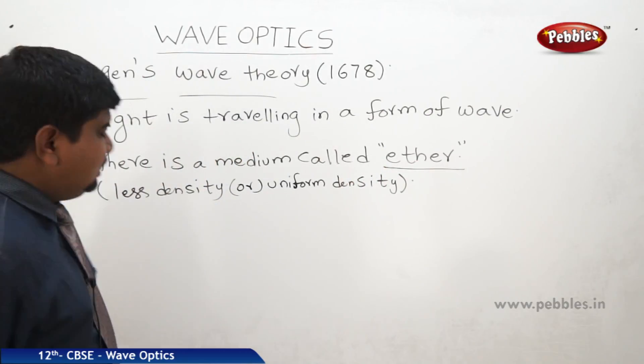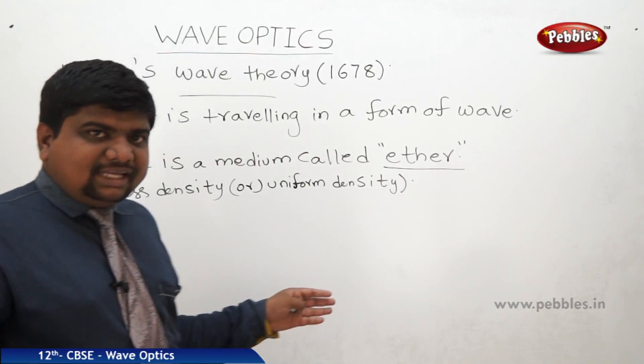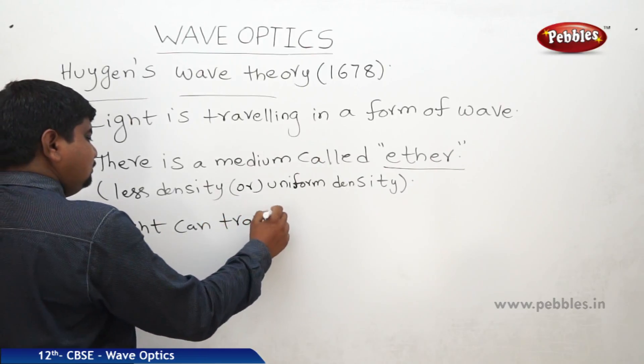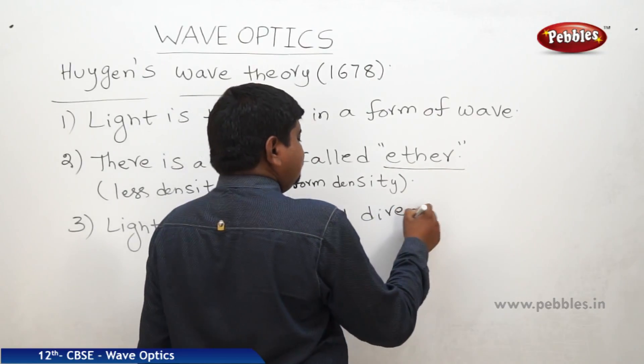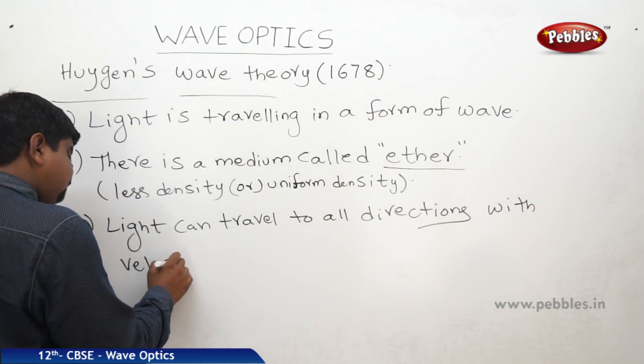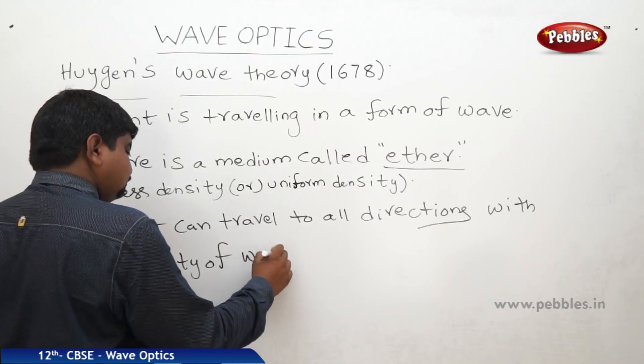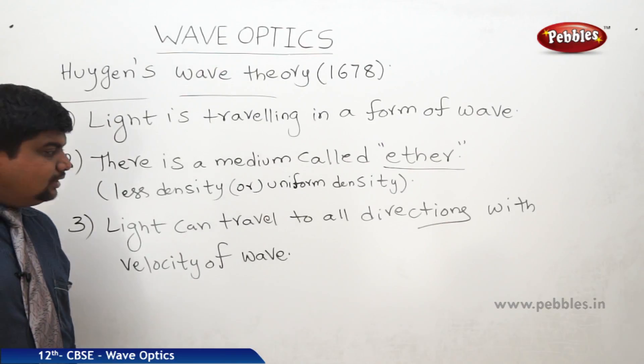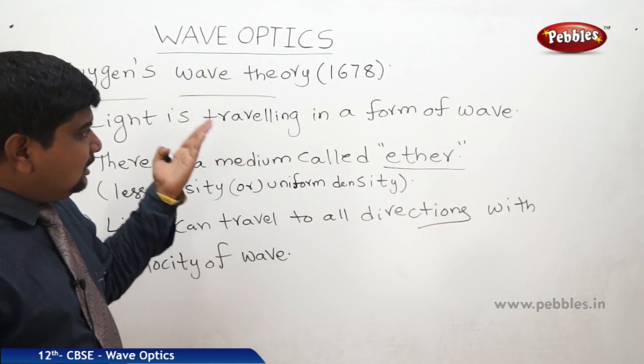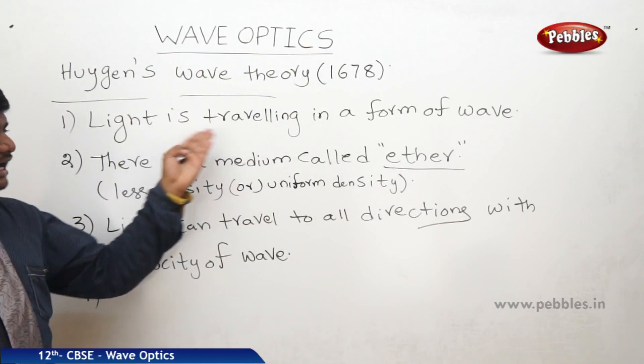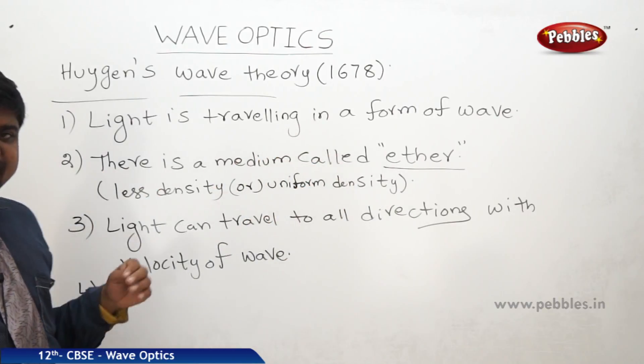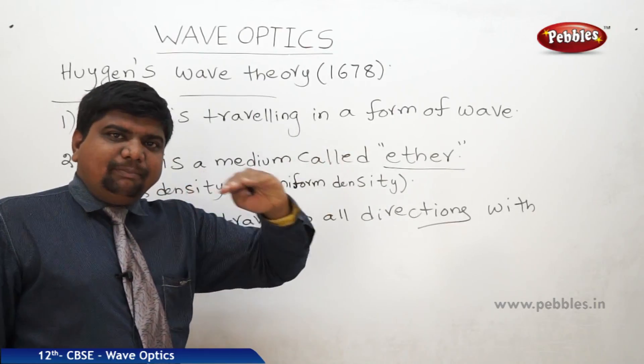This is one more point. And third one, this light can travel to all directions with the velocity of wave. And one more, what we can write is, he said that some of Newton's predictions are true. First one is the point which he added from Newton's theory is it has enormous velocity and its velocity will change from one point to another point or one medium to another medium. This is also one of the predictions by Huygens which is comparably true with Newton's.